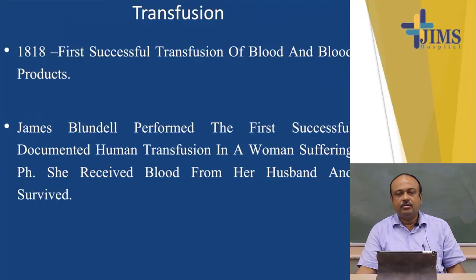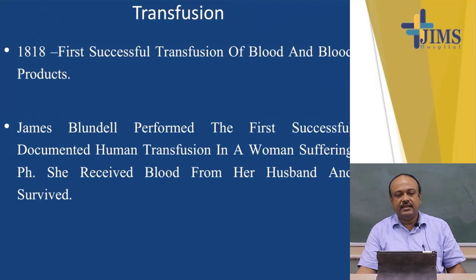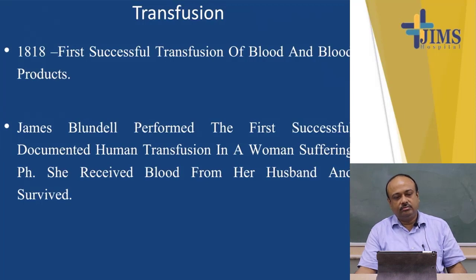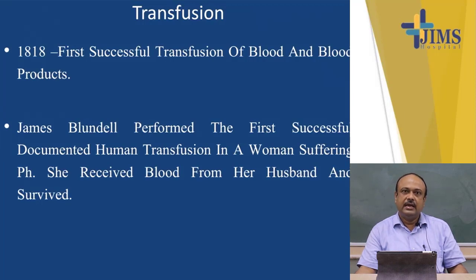Today, I am going to take a class on blood transfusion. Previously, we have discussed the topic shock and hemorrhage. We know the blood has various components — the cellular component and the plasma. In this chapter, we will discuss about the transfusion of blood and its various products.